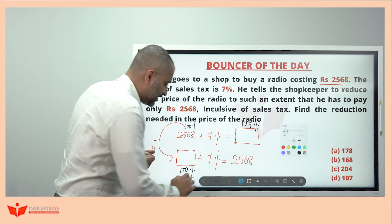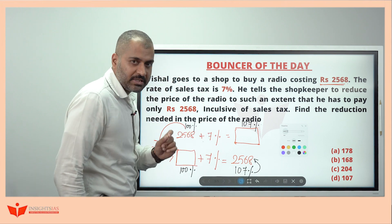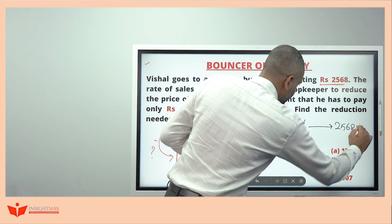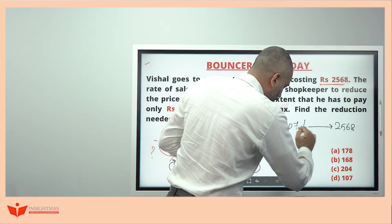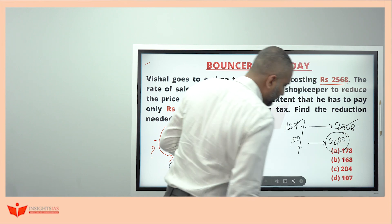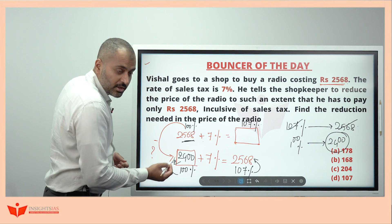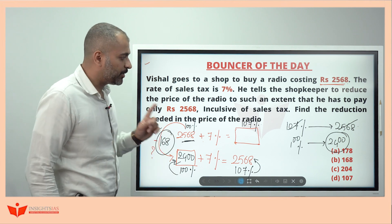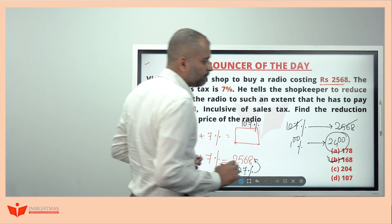This 107% is equal to 2568. So 1% is 2568 ÷ 107, which gives 100% as 2400. From 2568 to 2400, the reduction is 168. So the shopkeeper has to give a discount or adjustment of ₹168. That is the answer for this question.